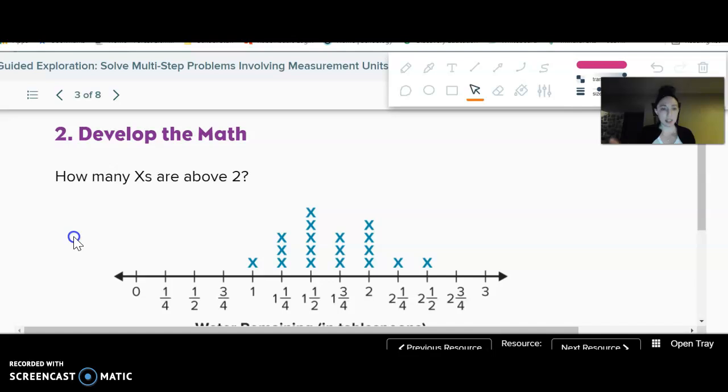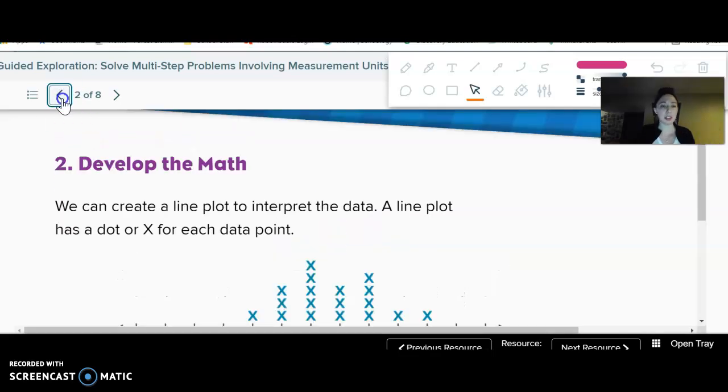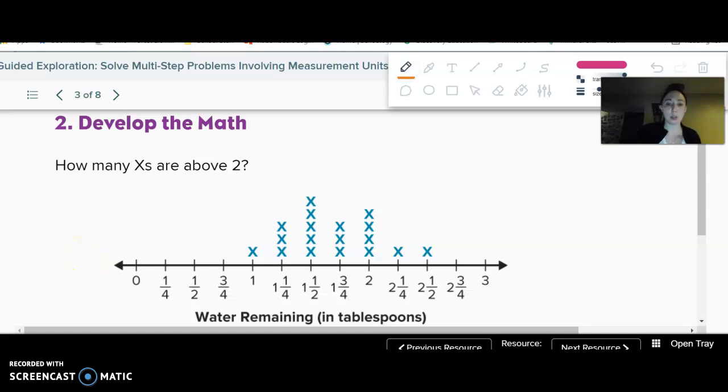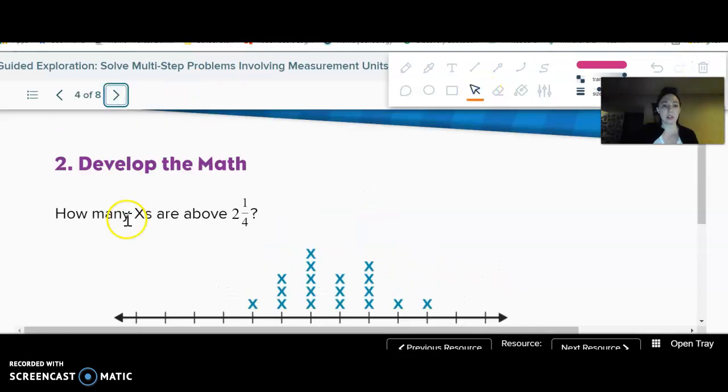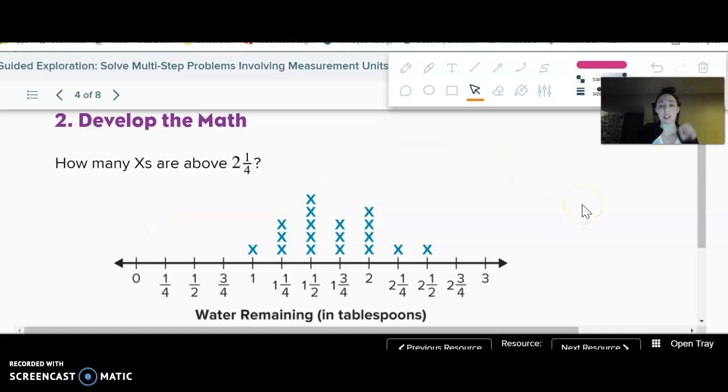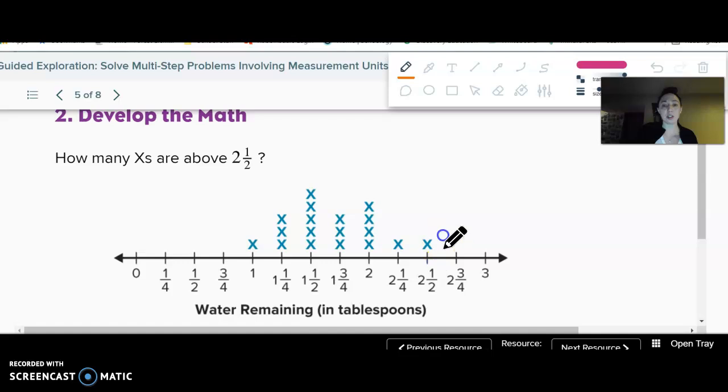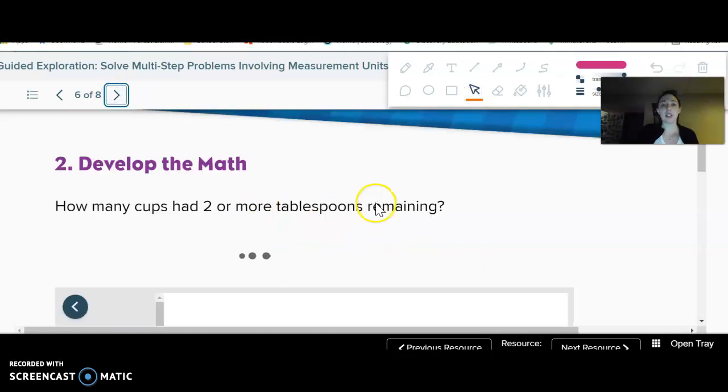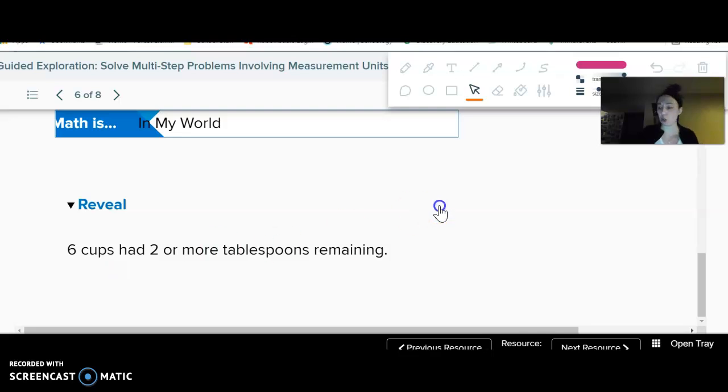So the question to think about again is how many X's are above two? Remember, because we're trying to figure out how many cups had two tablespoons or more of water remaining. So how many X's are above two? Well, we have four right there, right? There's four that had two tablespoons left. You can mark that on your paper if you want to track with me. How many X's are above two and one fourth? So how many had two and one fourth tablespoons of water. One. And then how many X's are above two and a half? Again, it is one. So we can see four, one, and one had two or more. So how many cups is that? Well, that is six cups. Six cups had two or more tablespoons remaining.